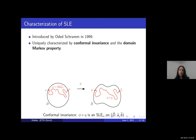Conformal invariance is illustrated in the figure. In the left part, we have an SLE eta in the domain D. Phi is a conformal map sending domain D to another domain D-tilde. Conformal invariance means that the image of eta under the conformal map Phi has the law of an SLE in the domain D-tilde.